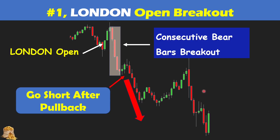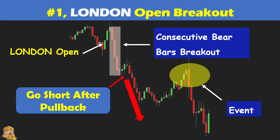A third thing to notice on this chart: after the New York open we have a huge bear bar with tails at both the top and bottom, meaning high market fluctuation — this is an economic event announcement triggering the market to fluctuate. It could go up or could go down. If you're in a position, you normally want to close it approaching the event to ensure you don't have a big loss. On event dates, especially for events like the US interest rate decision, you don't want to trade because it's hard to determine the trending direction of the market.